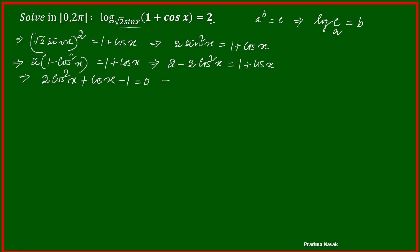On splitting the middle term, 2 cos square x plus 2 cos x minus cos x minus 1 is equal to 0. So this gives me two factors: one is 2 cos x minus 1 and cos x plus 1.